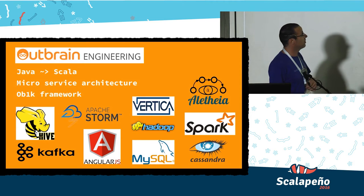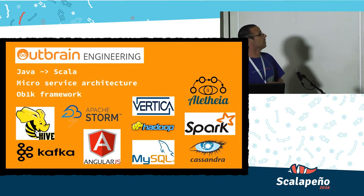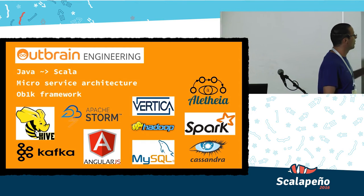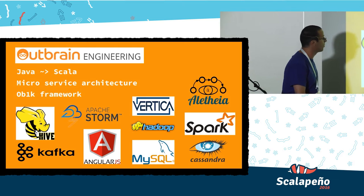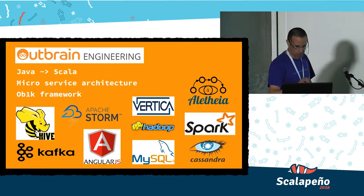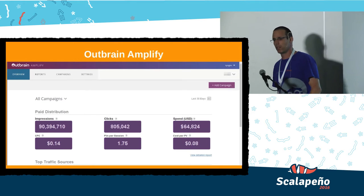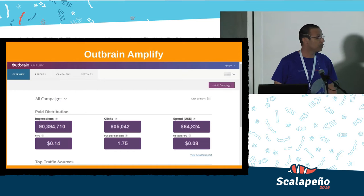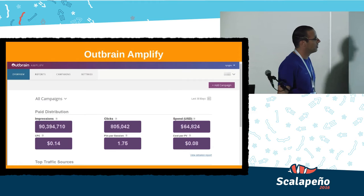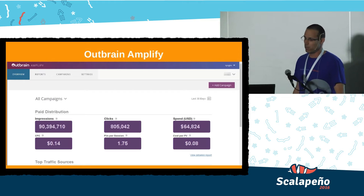And the last thing here is Facebook Messenger — the CNN bot that was presented is basically an Outbrain product. At Outbrain engineering, we work in a Java environment and are moving gradually to Scala. The architecture is microservices. We have the OBIC framework to handle all network stuff.